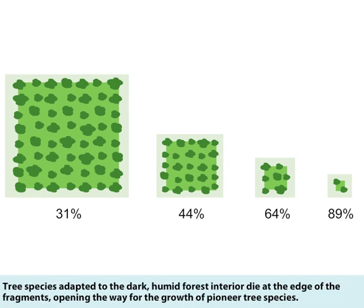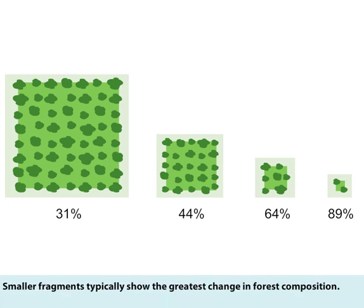Tree species adapted to the dark, humid forest interior die at the edge of the fragments, opening the way for the growth of pioneer tree species. Smaller fragments typically show the greatest change in forest composition.